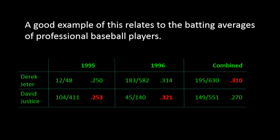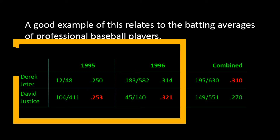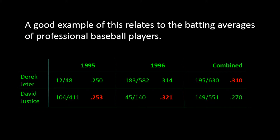A good example of Simpson's paradox involves the batting averages of players in professional baseball. It's possible for one player to have a higher batting average than another player during a given year, and again in the following year, but to have a lower batting average when the two years are combined. In this cross-tabulation table, we can see the un-aggregated data on the left for Derek Jeter and for David Justice. In both 1995 and 1996, David Justice had a higher batting average than Derek Jeter.